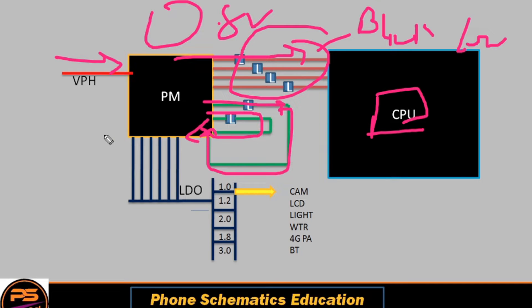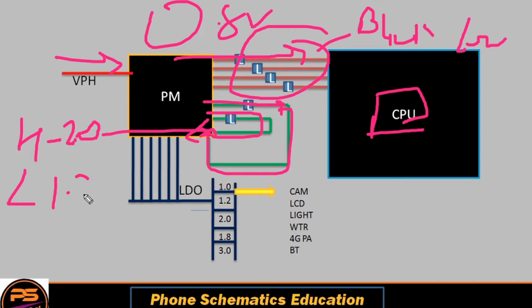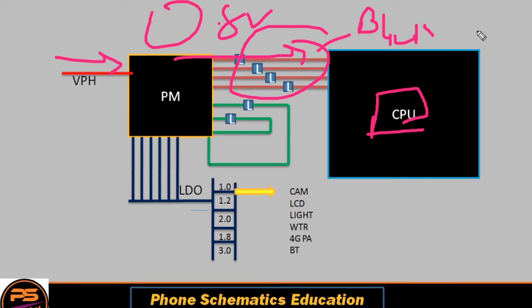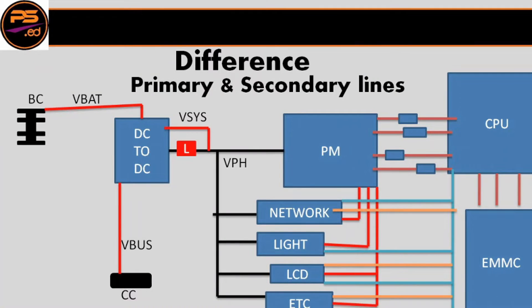These two lines are called higher LDO and lower LDO — in this line you get 2.0 volt or 1.2 volt; lower LDO is at 0.8 volt. Today we talk about what is a primary line and what is a secondary line, also what is the difference between them, and if any line is shorted, how do we check it. In the last video we understood how the VPH line works.